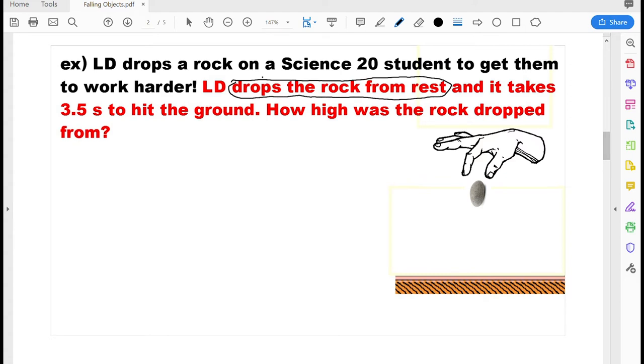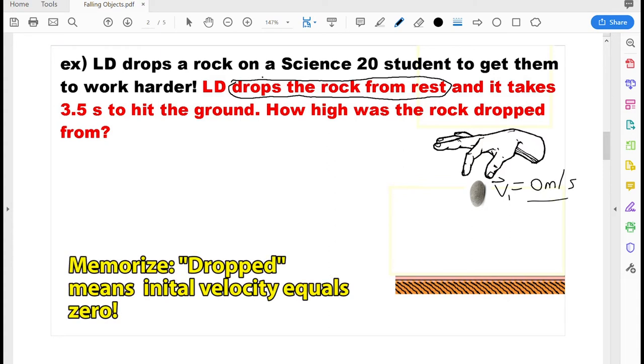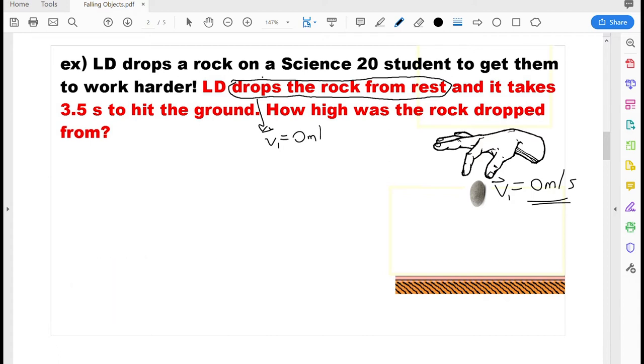You see, when you drop an object, like the diagram is showing here, the initial velocity of that object, how fast it's going when you first let go of it, is 0 meters per second. That's what it means to drop an object, is you let go of it, but that moment you let go of it, at the very initial part of the movement, it's not moving. So you have to remember when you see a question like this, that when you see the word drops, you have to think that means vi equals 0.